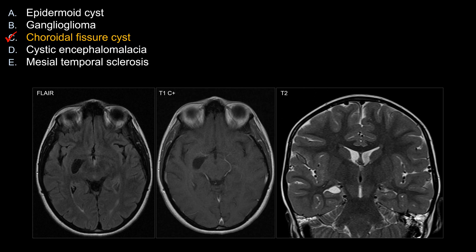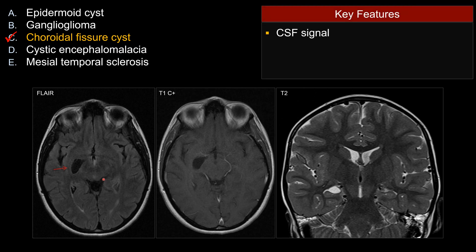The best choice is C, choroidal fissure cyst. The key imaging finding is a cystic lesion in the medial right temporal lobe. On FLAIR, the signal looks clean and it's bright on T2. So you should follow CSF signal intensity in all sequences.